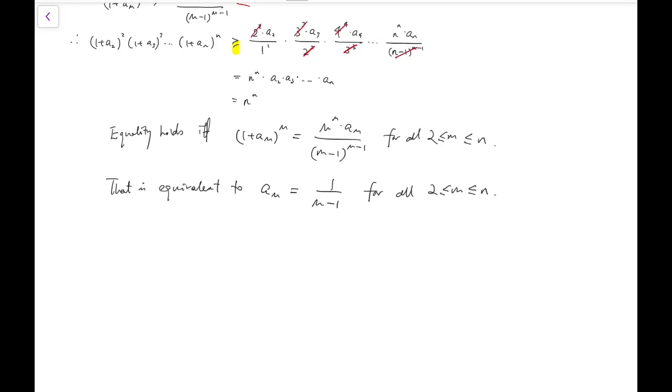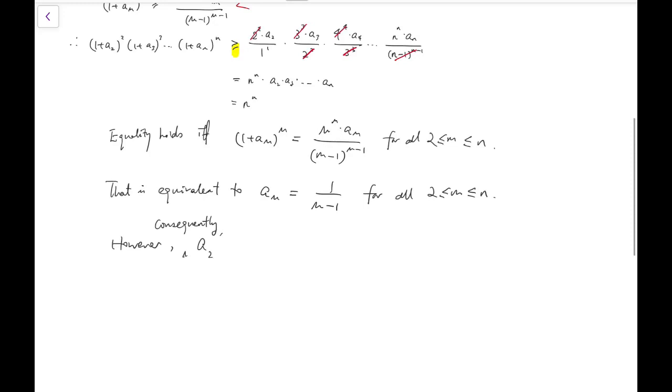So for example, a₂ is then 1, a₃ is then 1/2, and similarly aₘ will be 1/(m-1). However, consequently, a₂ · a₃ all the way to aₙ would then equal 1/1 · 1/2 · 1/3 all the way to 1/(n-1). And that is 1/(n-1)!. And that cannot be 1. In fact, it can never be 1 because n is at least 3. We've literally used all the conditions in the problem.